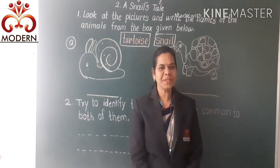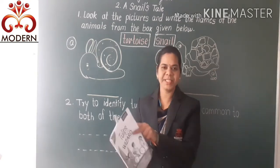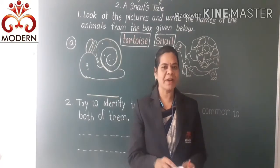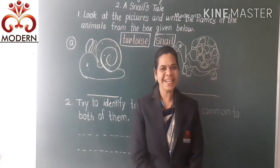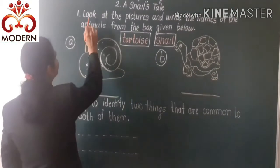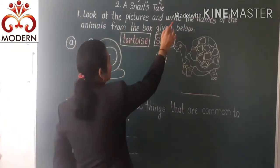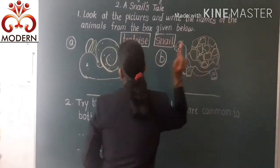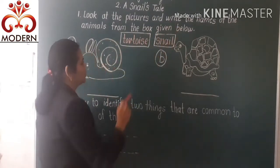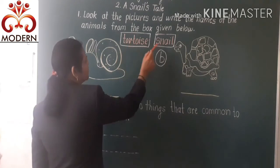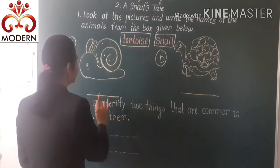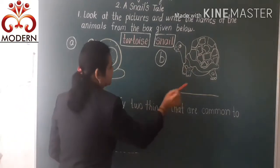Students, in the previous period we started our worksheet. Today I will take page number 5. Our first question is: look at the pictures and write the names of the animals from the box given below. The names of the animals are given, so we write their names here.